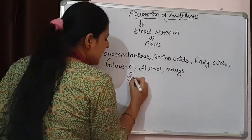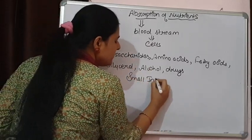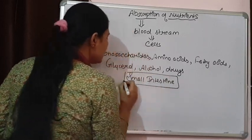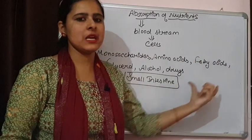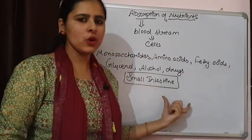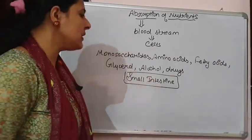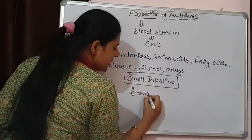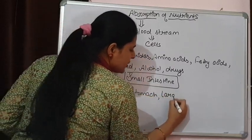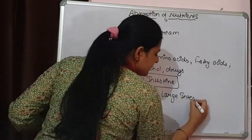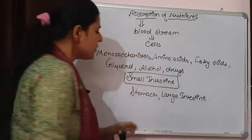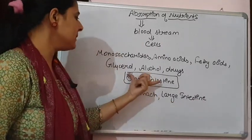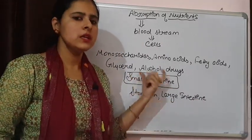Whenever absorption comes, the main part of the alimentary canal that is going to absorb maximum substances is the small intestine. That means 90% of the absorption of all these substances takes place in the small intestine. Other than the small intestine, some other organs are also involved like the stomach and large intestine, but maximally absorption takes place in the small intestine.